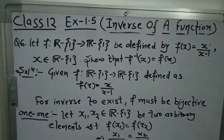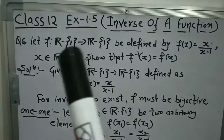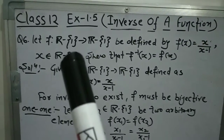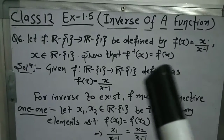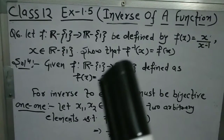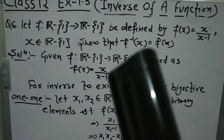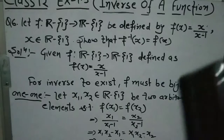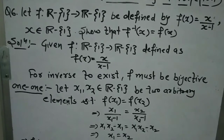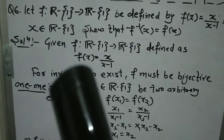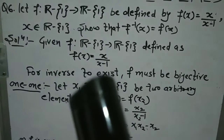Now we will do the next question — question number 6. The question is: Let f from R minus {1} to R minus {1}, meaning the set of all real numbers with only 1 removed, be defined by f(x) = x/(x - 1), where x belongs to the domain. We need to show that f⁻¹(x) = f(x), meaning the inverse of f equals the function itself. We need to prove bijective, so let's see how.